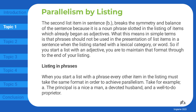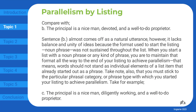Listing in phrases. When you start a list with a phrase, every other item in the listing must take the same format in order to achieve parallelism. Take for example: the principal is a nicer man, a devoted husband, and a well-to-do proprietor. Compare with: the principal is a nice man, devoted, and a well-to-do proprietor. Sentence B almost comes off as a natural utterance; however, it lacks balance and unity of ideas because the format used to start the listing — noun phrase — was not sustained throughout the list.